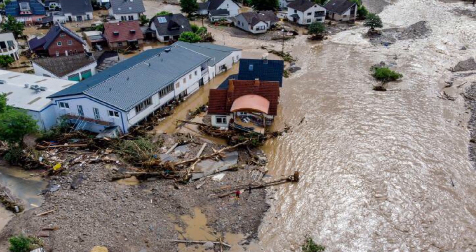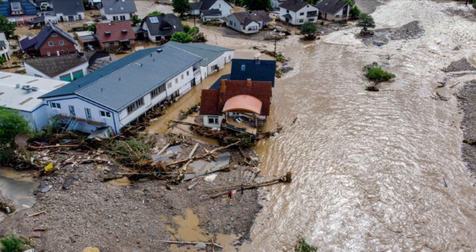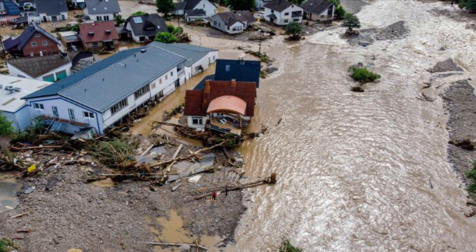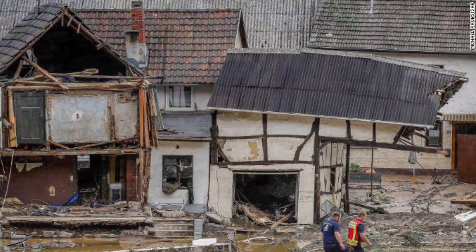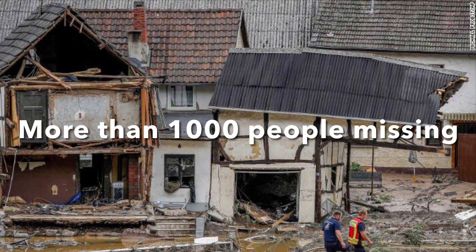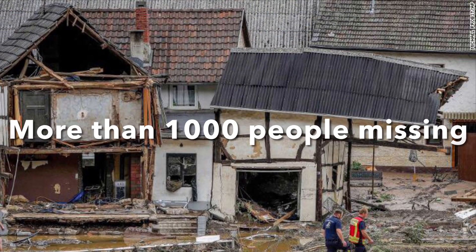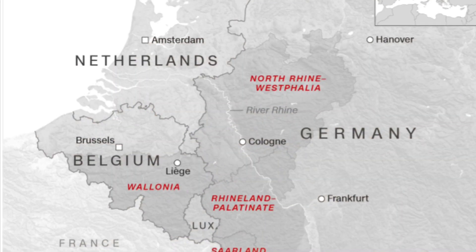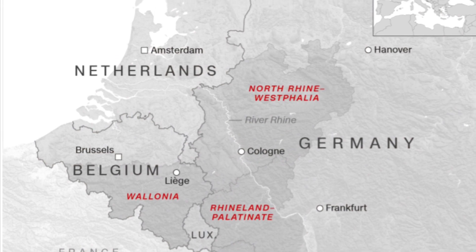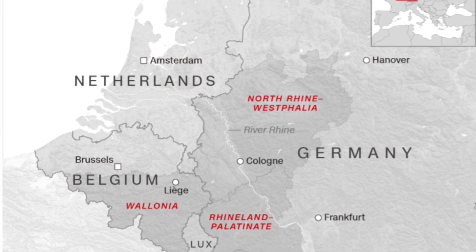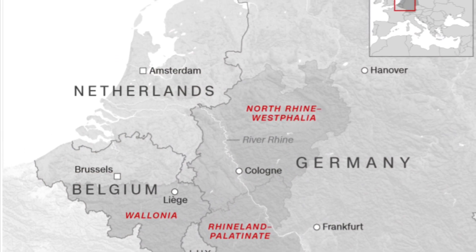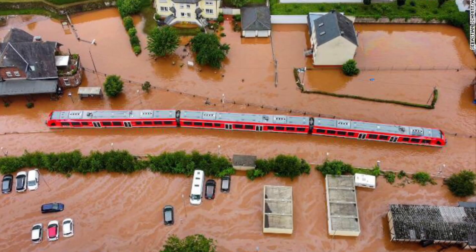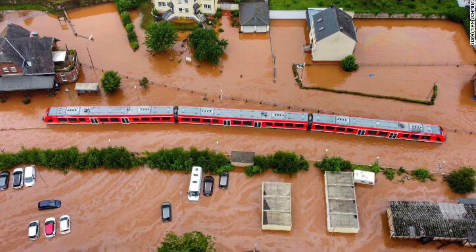A catastrophic flood in Western Europe has killed more than 120 people and more than 1,000 individuals are still missing. Homes and people have been washed away in Germany, Belgium and the Netherlands.